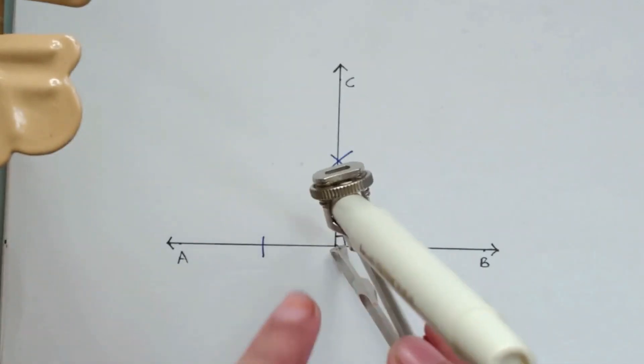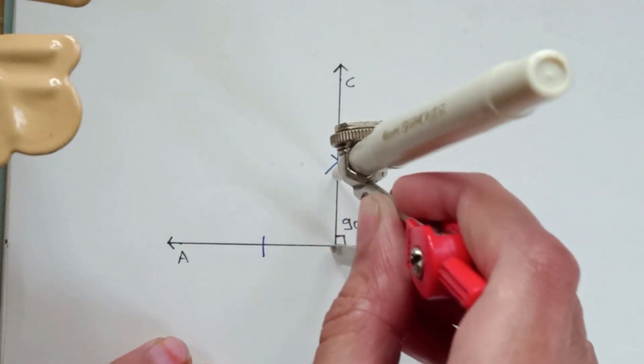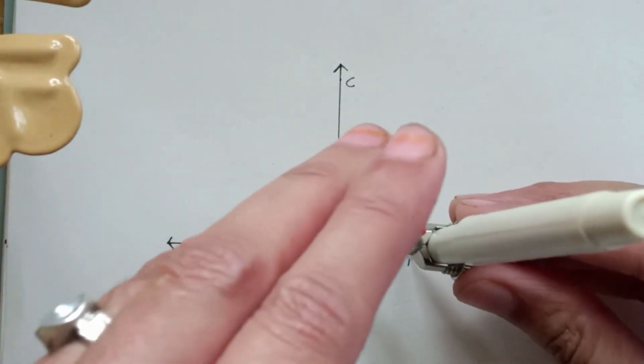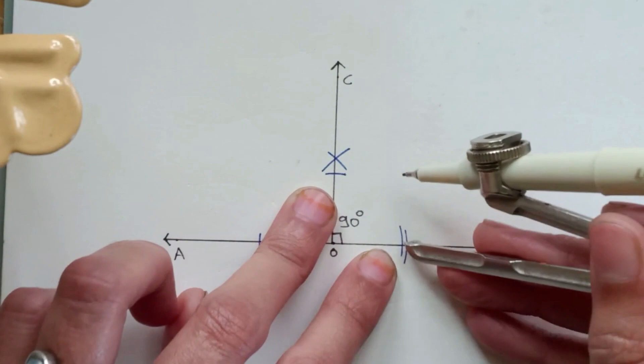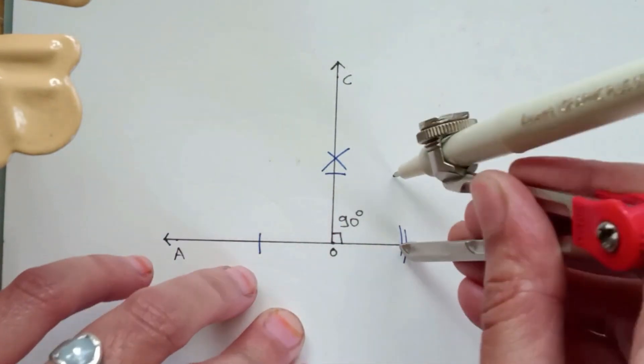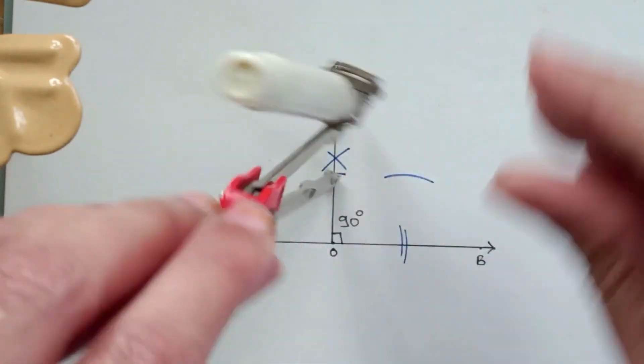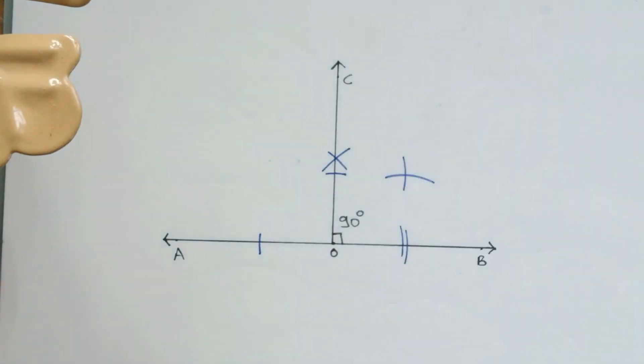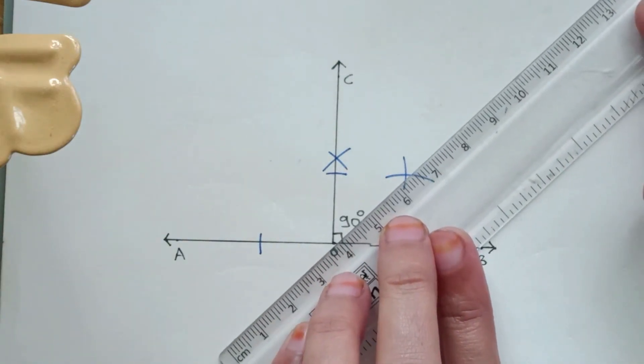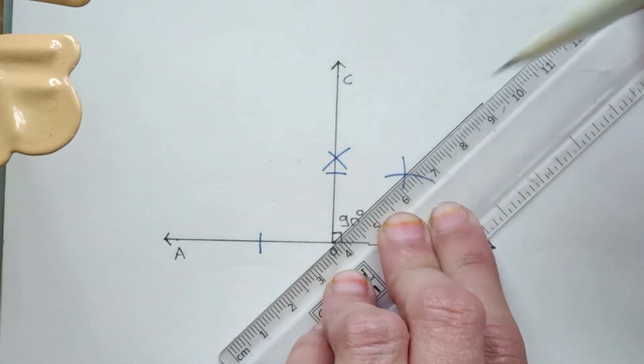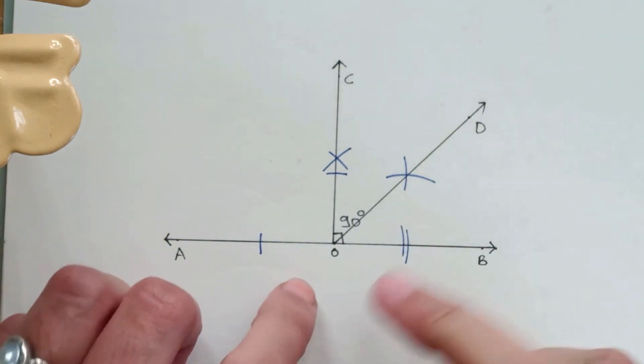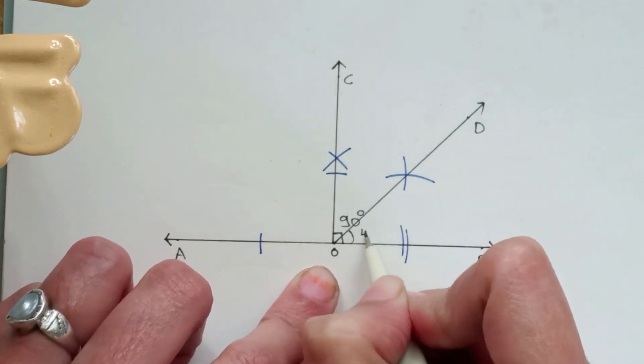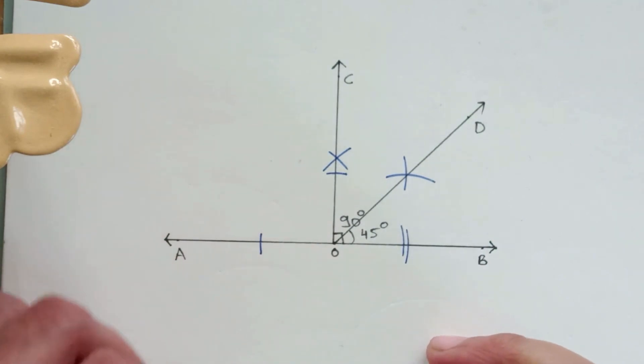Take any amount of distance in your compass, keep the pointer on O and intersect the line OC and also intersect the line OB. So here we get two new arcs. Without changing the distance of the compass, put the pointer on these new arcs and draw two intersecting arcs from these two points. So here we get a new intersection point. Now we have to join this point with O. Let's call this line OD. So line OD is at 45 degrees angle from line OB.